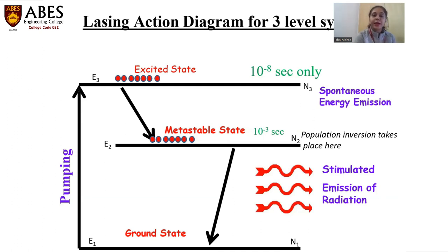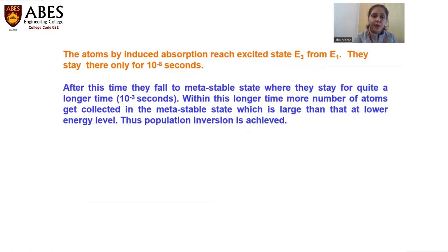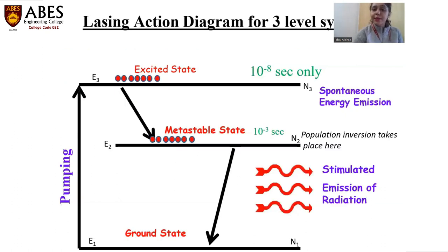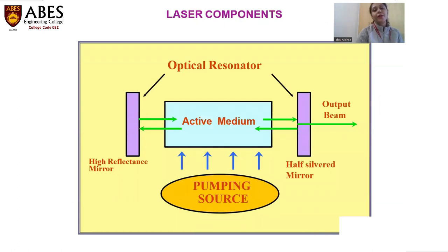This is the energy level diagram for a three-level laser system. The atoms, by induced absorption, reach excited state E3 from E1 and stay there for only 10⁻⁸ seconds. The second level E2 is the metastable state, which has a longer lifetime such that population inversion can take place — and population inversion is the essential condition for the laser system.